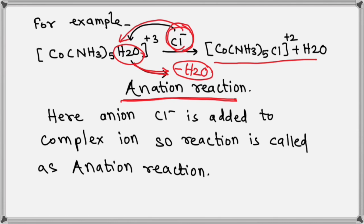Alright. So here, chloride is added to the complex ion. So the reaction is called as anation reaction. It is that simple.